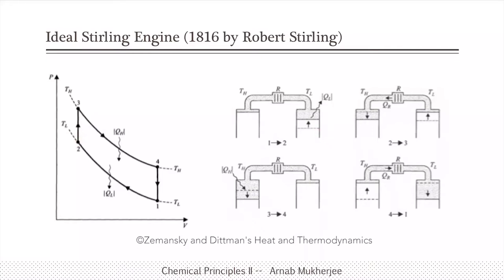At point two, the gas is now in contact with the high-temperature reservoir. Earlier the gas was mostly in contact with the low-temperature reservoir and it shrunk isothermally, releasing heat. In the second step, the gas in contact with the high-temperature reservoir takes heat from the regenerator inside the system, while the volume on the right shrinks and the volume on the left increases — so there is no net change in volume.